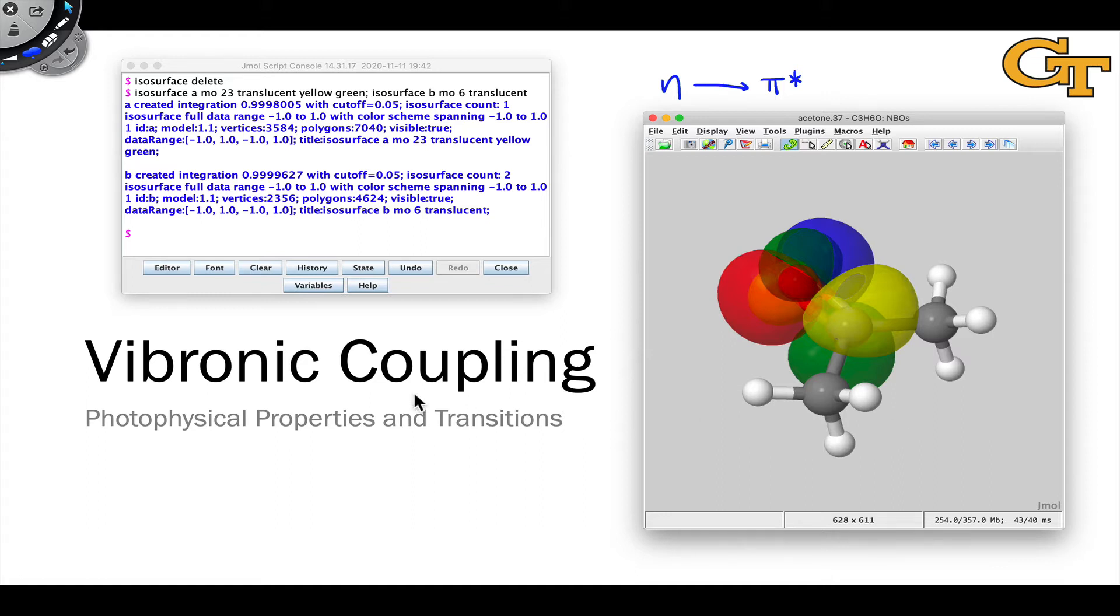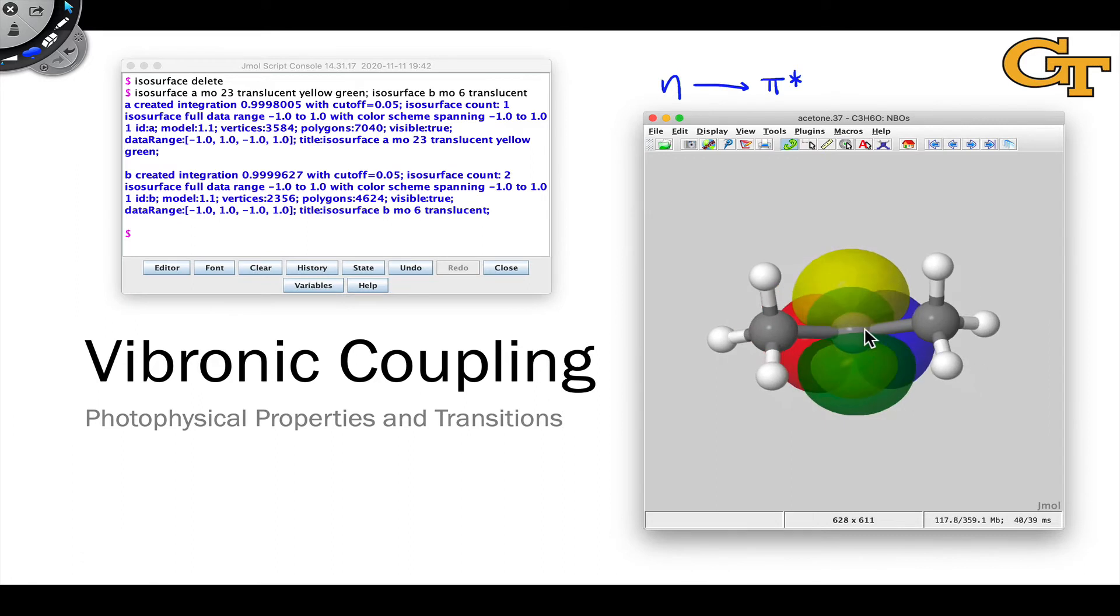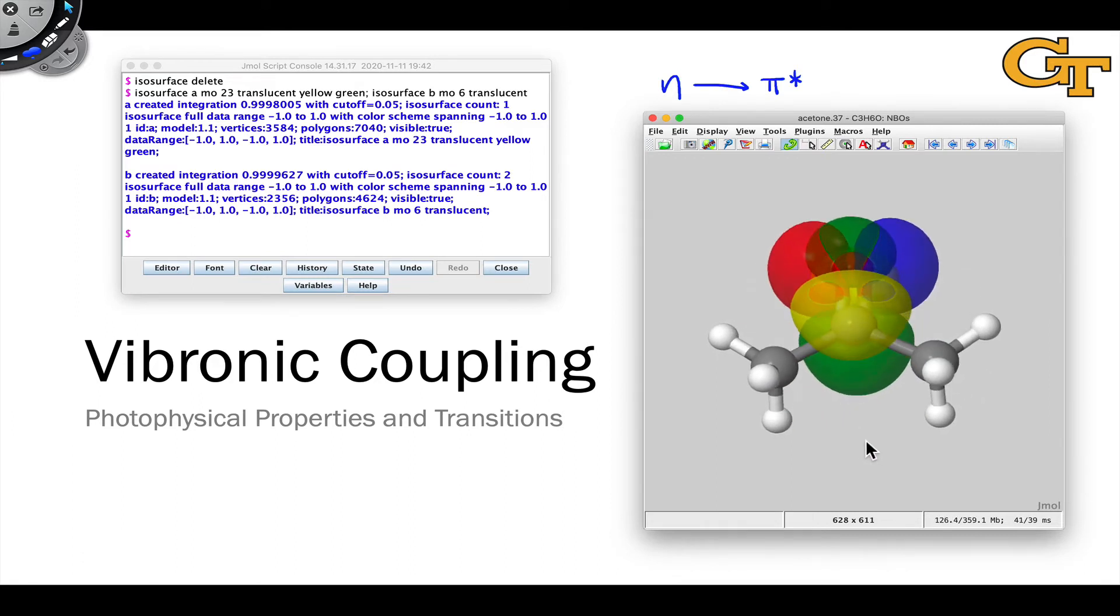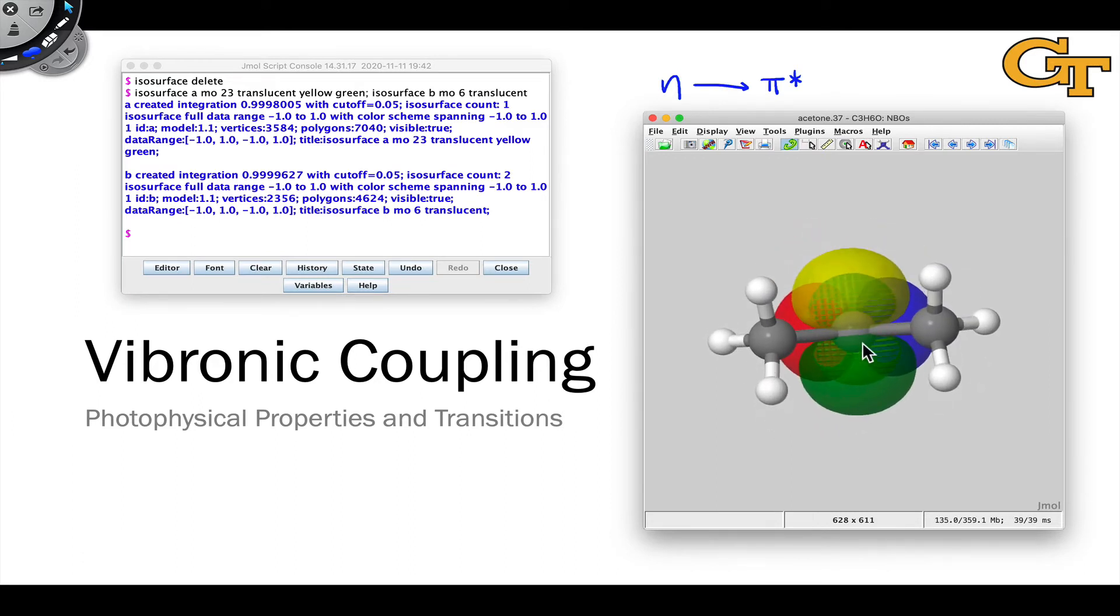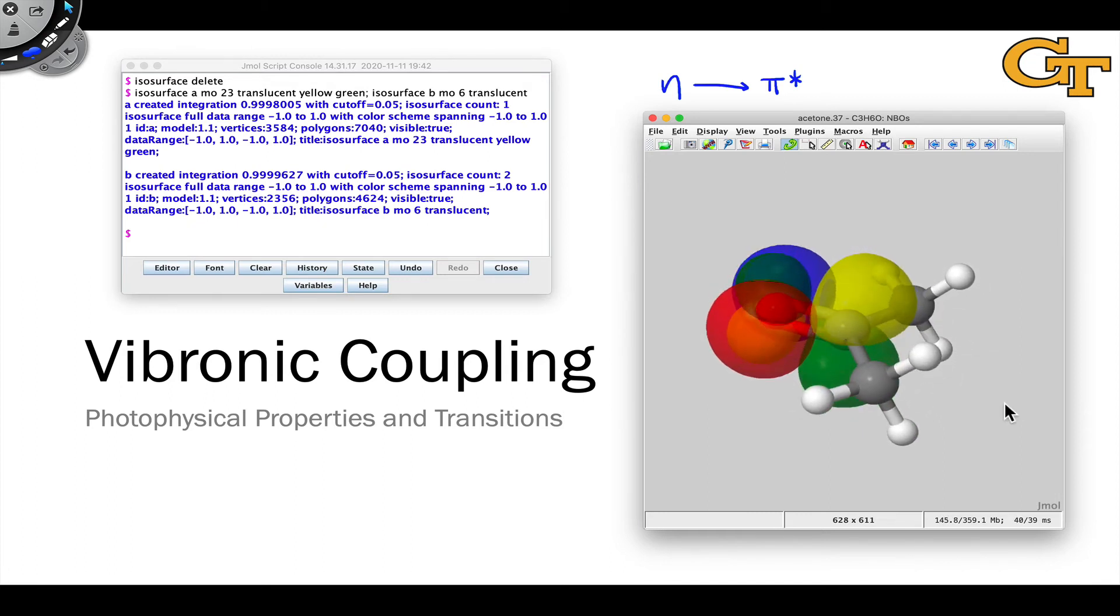We're going to understand that in this video through the idea of vibronic coupling. The notion that the molecule is not static, the nuclei and the atoms are moving, and as they move, the electron configuration changes. Nuclear and electronic motions are not exactly decoupled. They do not act completely independently of one another.